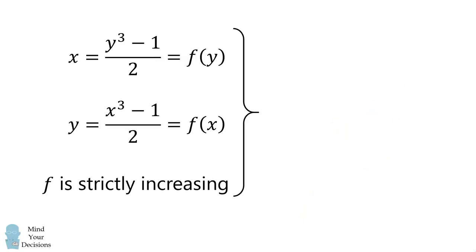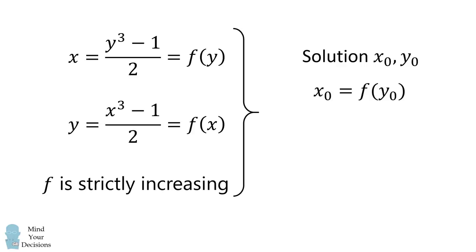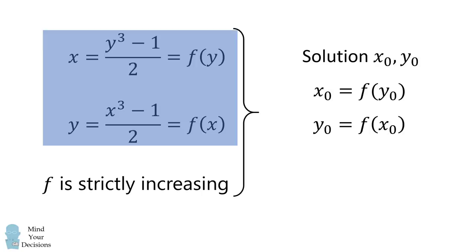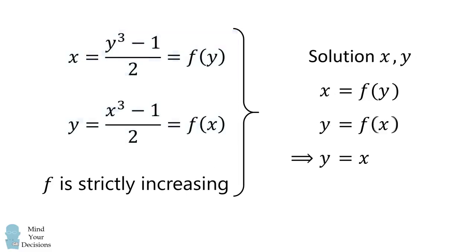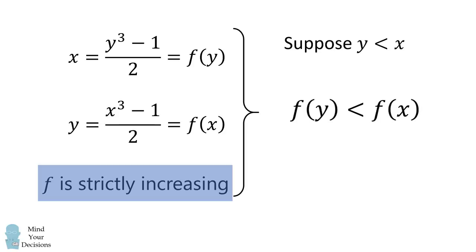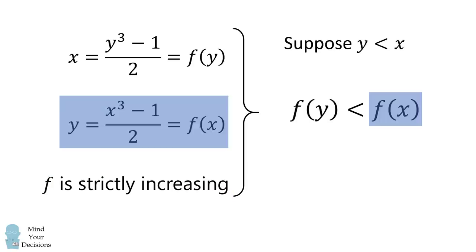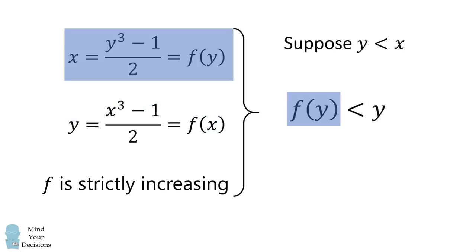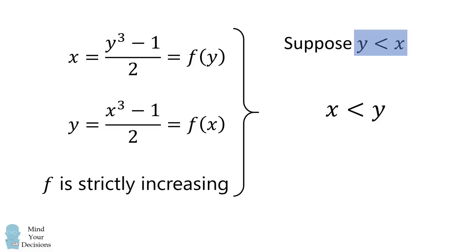Now let's prove this formally. Suppose we have a solution x0, y0, meaning x0 equals f of y0 and y0 equals f of x0. We want to show that y0 equals x0. To avoid writing x0 and y0 repeatedly, we fix a solution and denote it as x, y. We will prove that y equals x by contradiction. Suppose that y is less than x. Then, since f is strictly increasing, we can apply f to both sides of the inequality. We then have f of x equals y, and f of y equals x. We assumed y was less than x, but we proved that x is less than y — and that's a contradiction.